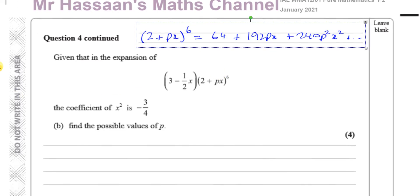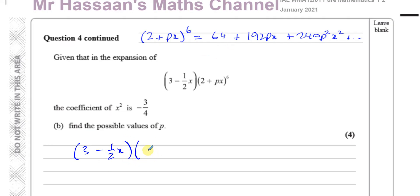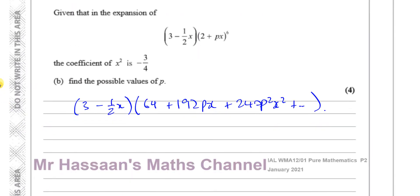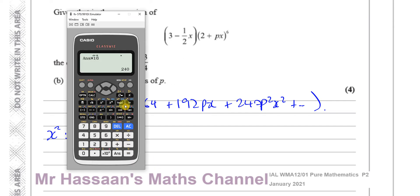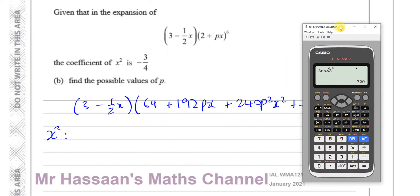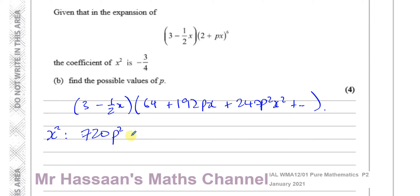We've got to multiply (3 − ½x) by the expansion: 64 + 192Px + 240P²x². We need to think about which terms give us the coefficient of x squared. Multiplying 3 by 64 won't give an x² term, and 3 by 192Px won't either. But 3 times 240P²x² will give an x² term, so 3 times 240 gives us 720P².